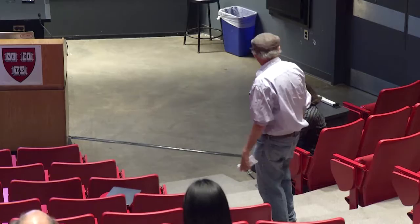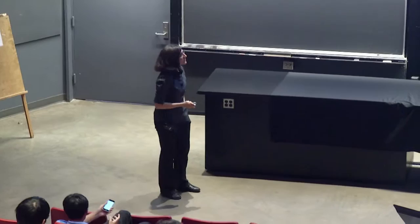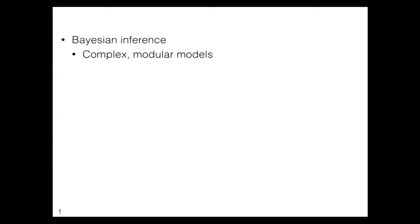I'm going to be talking about uncertainty quantification and robustness quantification in Bayesian inference. There's a lot to like about Bayesian inference. It lets us have rich hierarchical models of complex physical phenomena, but also complex relationships in your data. You might have a bunch of studies that you've done and want to share power across those studies.